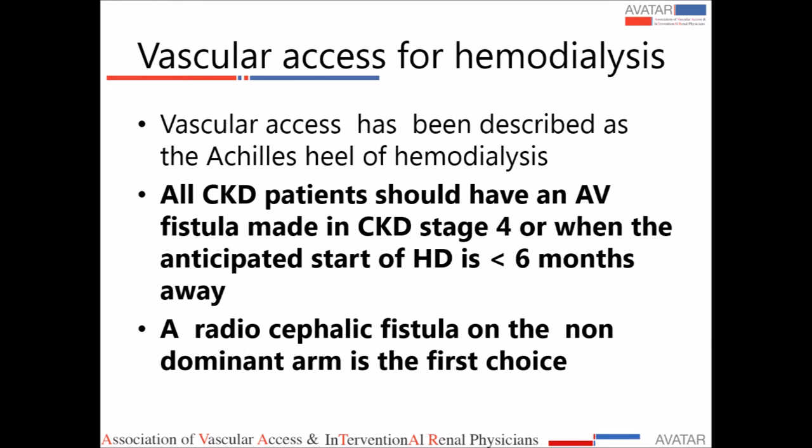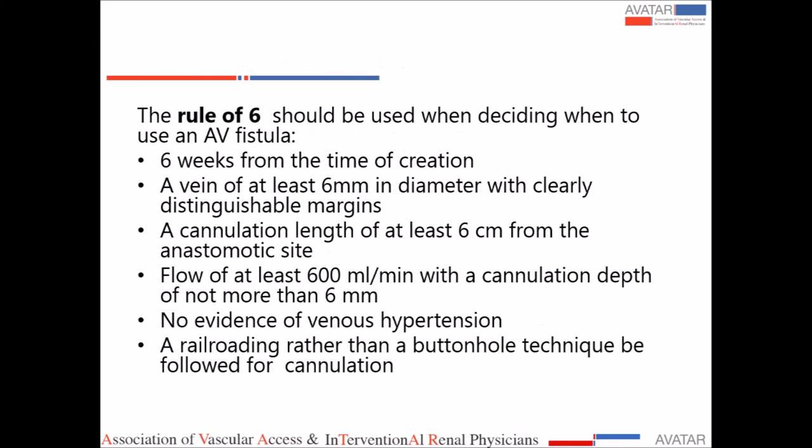Coming to vascular access — all patients should have an AV fistula made in CKD stage 4, or when the anticipated start of dialysis is less than six months away. The preferred option is a radiocephalic fistula on the non-dominant arm. When cannulating a fistula, the rule of six should be followed: at least six months from creation, a vein of at least six millimeters diameter with clearly distinguishable margins, a cannulation length of at least six centimeters from the anastomotic site, a flow rate of at least 600 ml per minute with cannulation depth no more than six millimeters, and no evidence of venous hypertension.